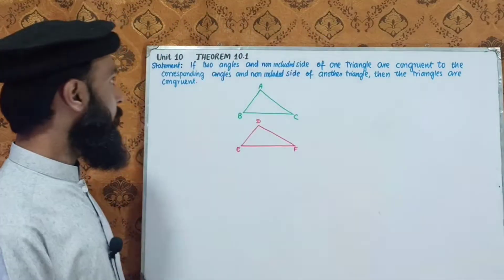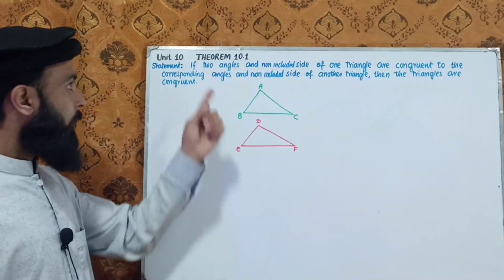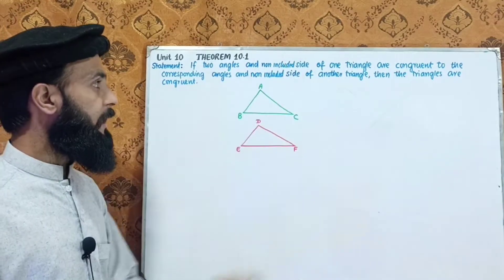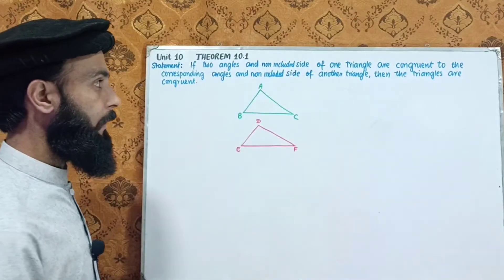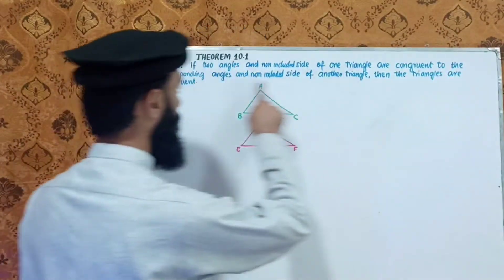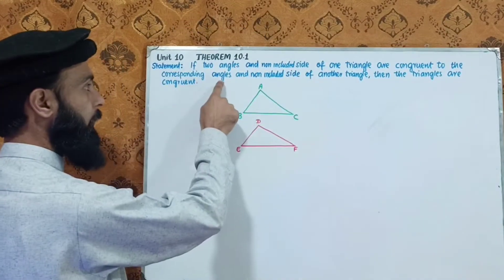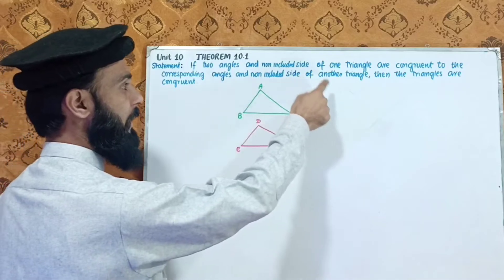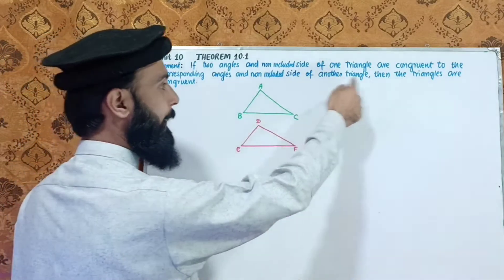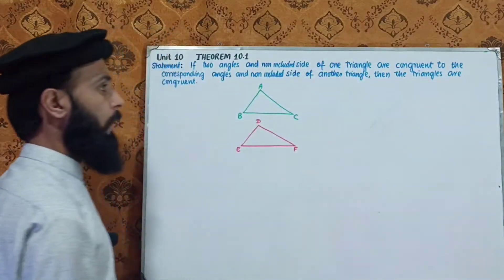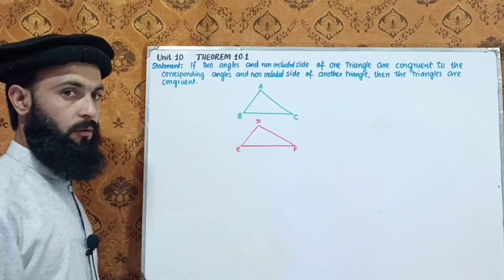Theorem 10.1: If two angles and the non-included side of one triangle are congruent to the corresponding angles and non-included side of another triangle, then the triangles are congruent.